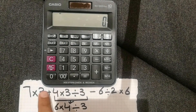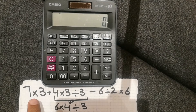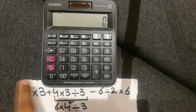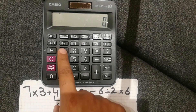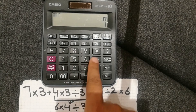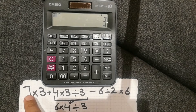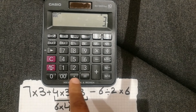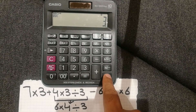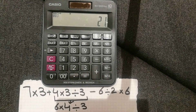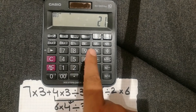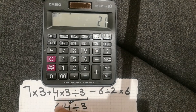The next step — you can see here we write 7 multiplied by 3. So we do this on the calculator: 7 multiply 3. You can see it is with a plus sign, so we press the M plus button.